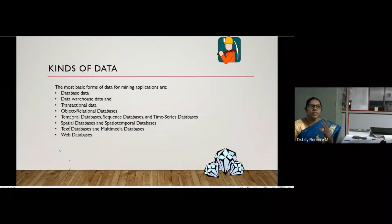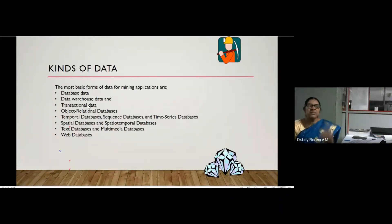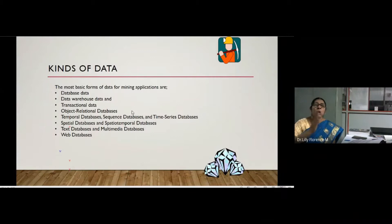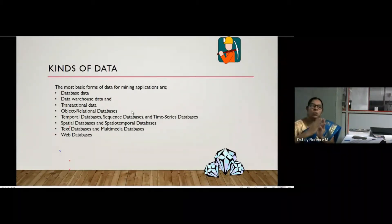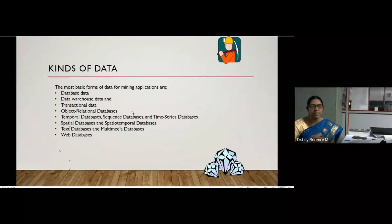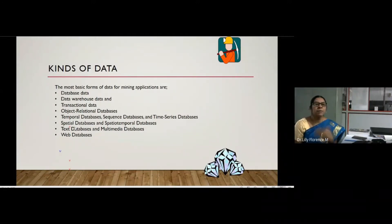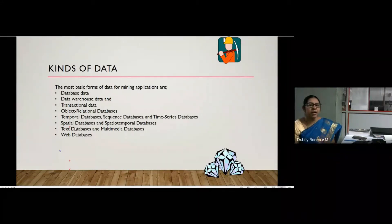Object-oriented relational databases combine relational databases with object-oriented concepts, supporting features like class, object, inheritance, and polymorphism. Temporal databases store time-related data. Sequence databases record all sequential events over time. Time series databases store data like stock market or inventory data that is based on time — all of these can be used for our mining process.